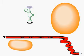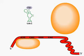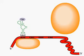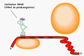To begin translation, a large and small ribosomal subunit, along with the initiating tRNA, assemble onto the mRNA.